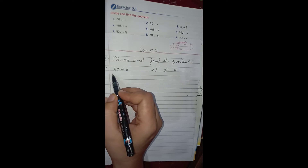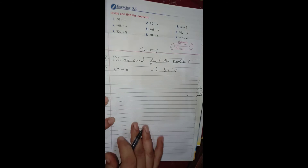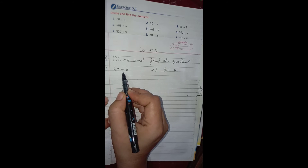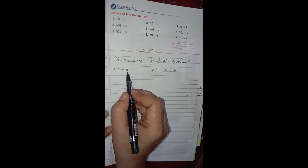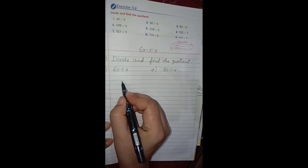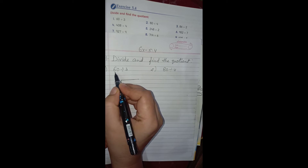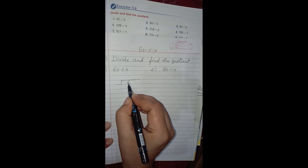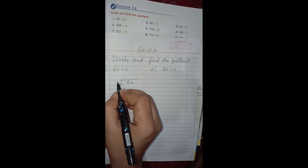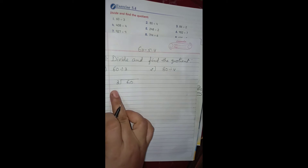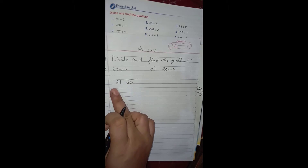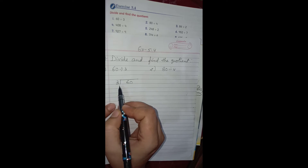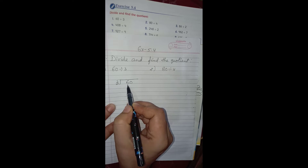The first part is 60 divided by 3. The number written before the sign of division is the dividend, and the number after the sign of division is the divisor. So we write 60 as the dividend and 3 as the divisor.